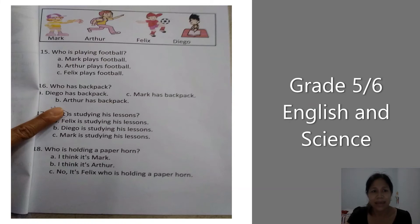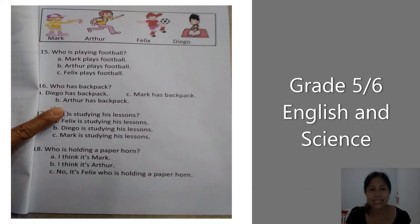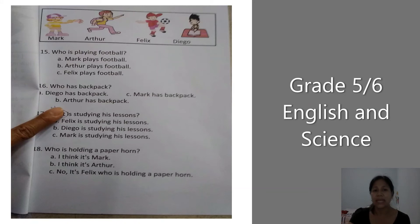Number seventeen: who is studying his lesson? A — Felix is studying his lesson. B — Diego is studying his lesson. C — Mark is studying his lesson. Number eighteen: who is holding a paper horn? A — I think it's Mark. B — I think it's Arthur. C — No, it's Felix. Which is the correct answer?